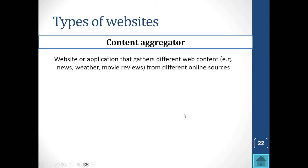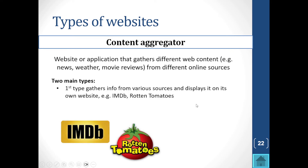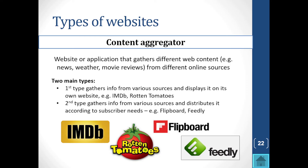There are web applications we access, like Gmail and Google Calendar. Then we have content aggregators — a website or application that gathers different web content like news or movie reviews from different online sources. There are two main types: the first displays gathered content on its own website, like IMDb and Rotten Tomatoes. The second gathers content but distributes only selected content to subscribers based on their preferences.